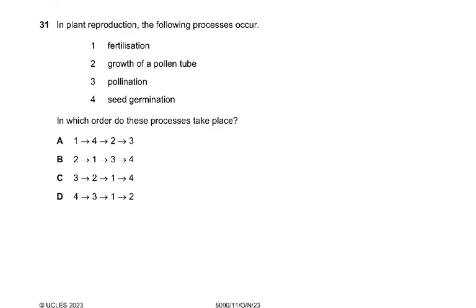Question 31: In plant reproduction the following processes occur: fertilisation, growth of a pollen tube, pollination, and seed germination. The answer is C. The correct order is: pollination first, then growth of the pollen tube, then fertilisation, then seed germination. This is very factual — you either know it or you don't.